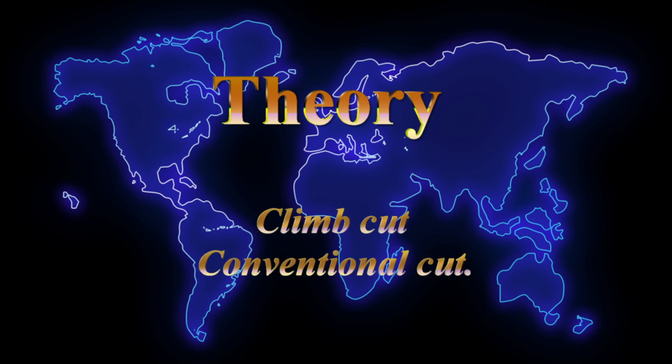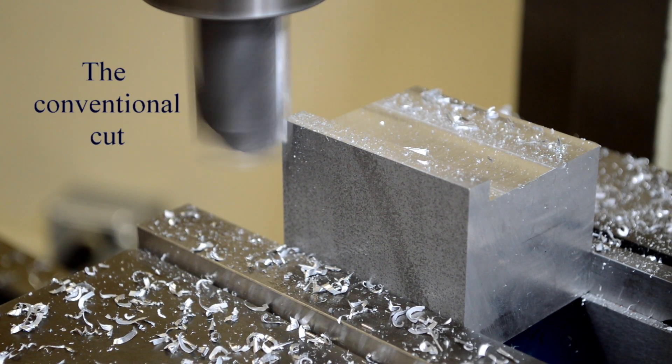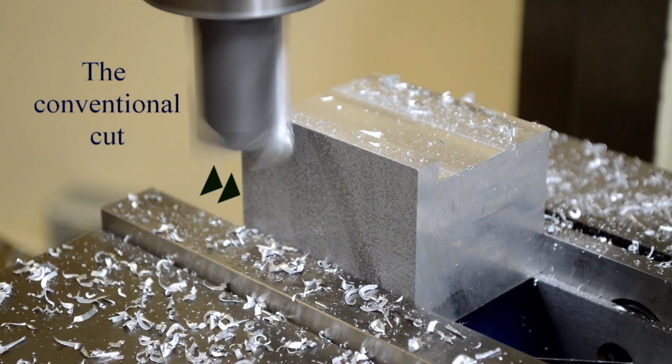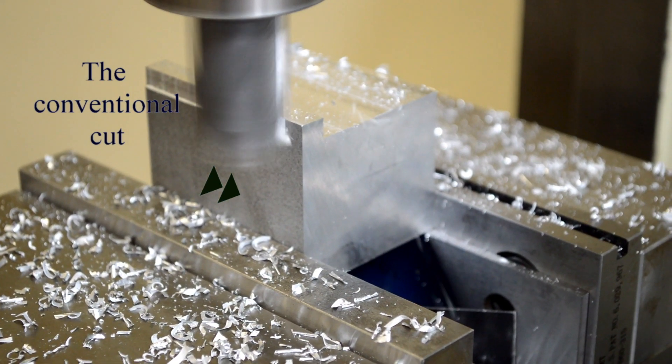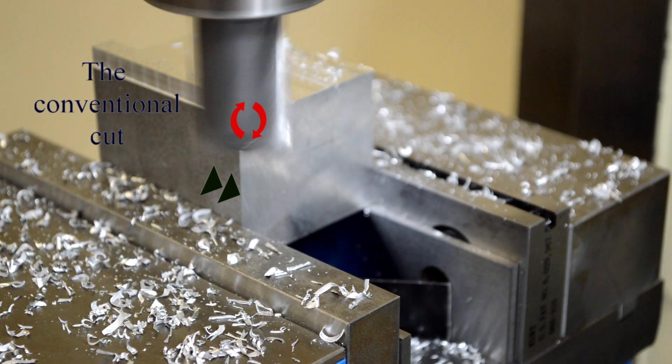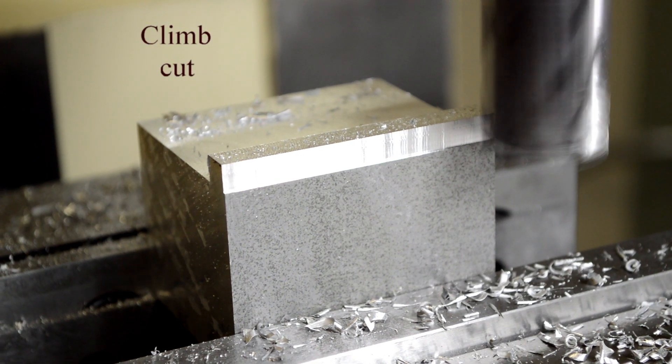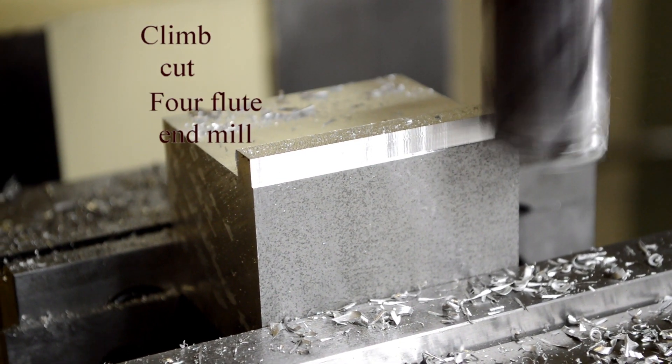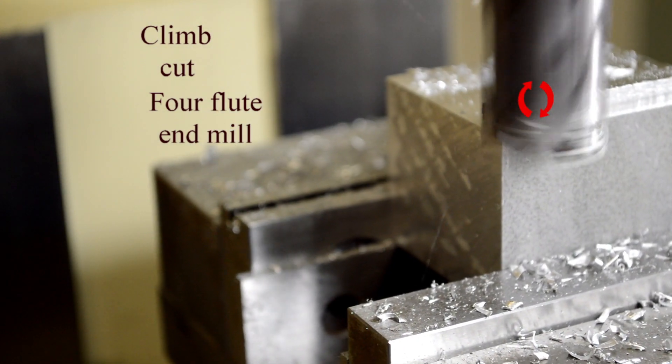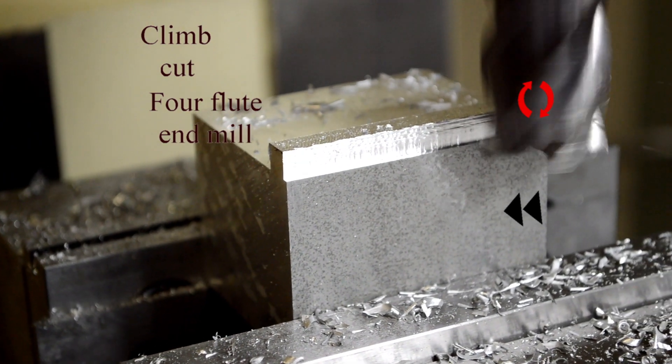This is an explanation about the difference between a climb cut and a conventional cut. The conventional cut has the spindle turning clockwise and is advancing on the material. And that's the conventional cut, clockwise, advancing on the material. Here's the climb cut. We're still clockwise, and now we're moving in the other direction on the material. So, we're actually climbing on it or rolling over the material. And that's the climb cut versus the conventional cut.